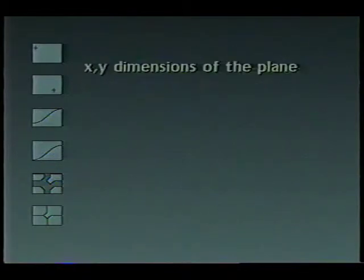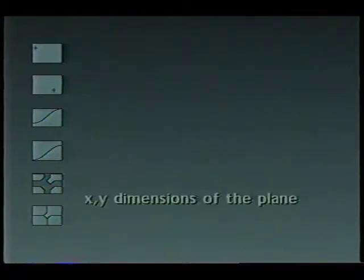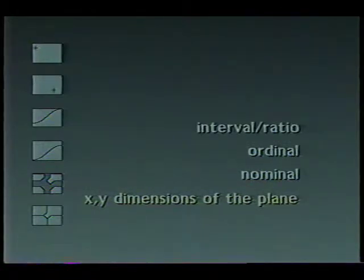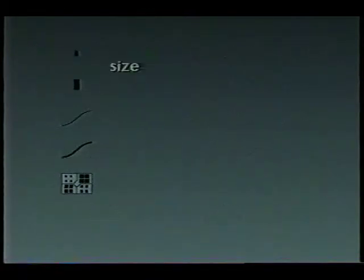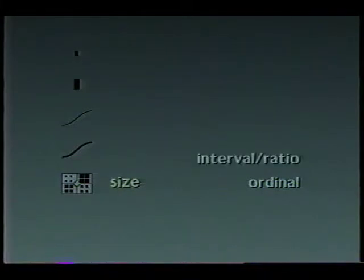Bertin's graphic sign system is particularly appealing to those of us whose business it is to design unambiguous graphic representations of the human and physical world. He asserts that each variable corresponds with a set of signifying properties or levels of data measurement — we use the terms nominal, ordinal, and interval ratio here. According to Bertin, ambiguous representations can be avoided by correctly matching the signifying properties of the visual variables with the levels of measurement of the data.